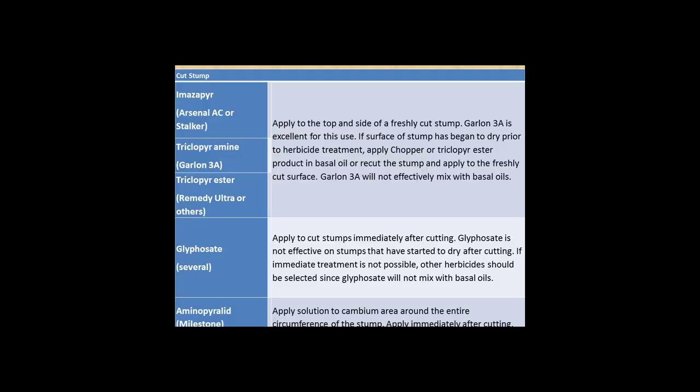Here are a couple of herbicides used with a cut stump treatment: again Arsenal or Stocker, as well as triclopyr — examples include Garlon 3A and Element 3A. There are a lot of different names for these herbicides, but they contain the same active ingredients. One I didn't mention is Milestone — you can use that for a cut stump treatment as well, and you want to apply it immediately after cutting.